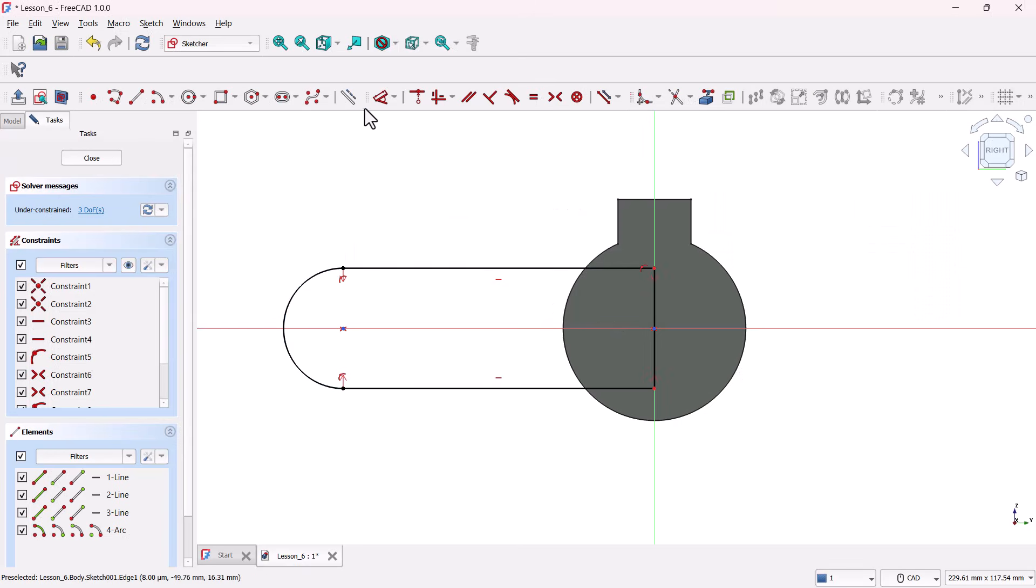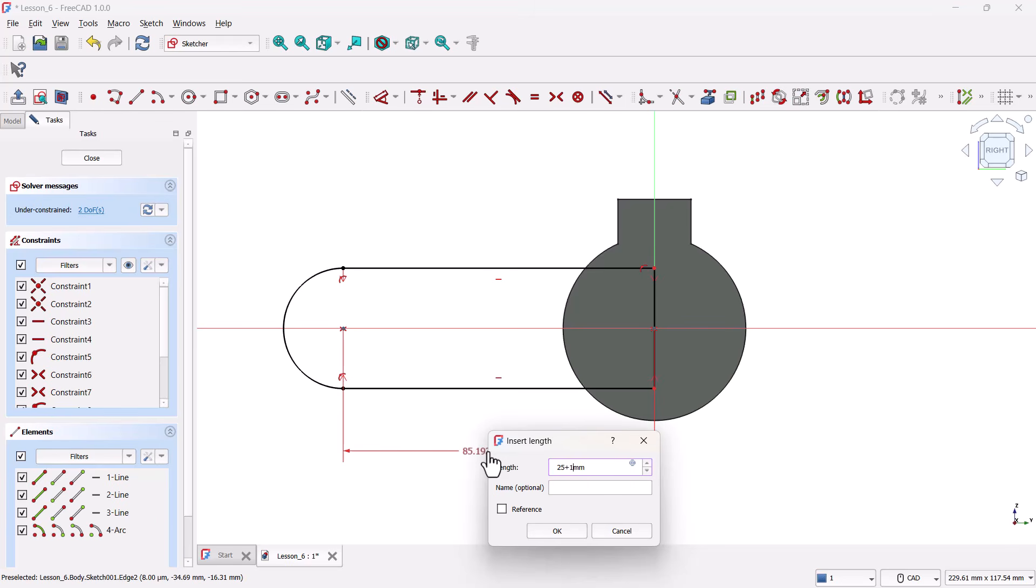Now, add this dimension. Grab the dimension tool and add this length as expression, that is 25 radius of cylinder plus 13 plus 40 plus 20 millimeters. FreeCAD will automatically calculate to 98 millimeters.